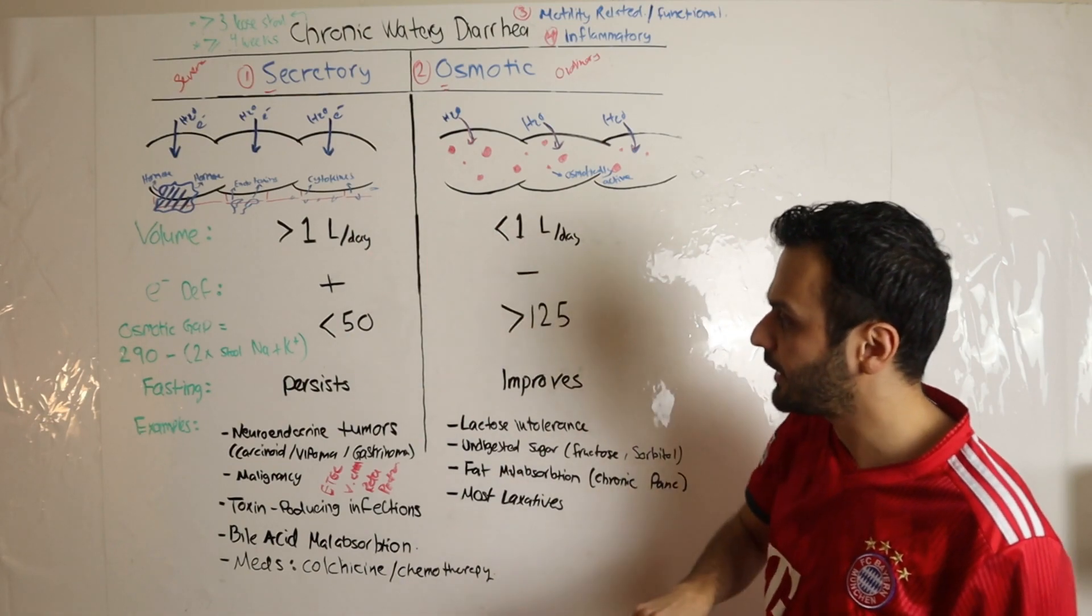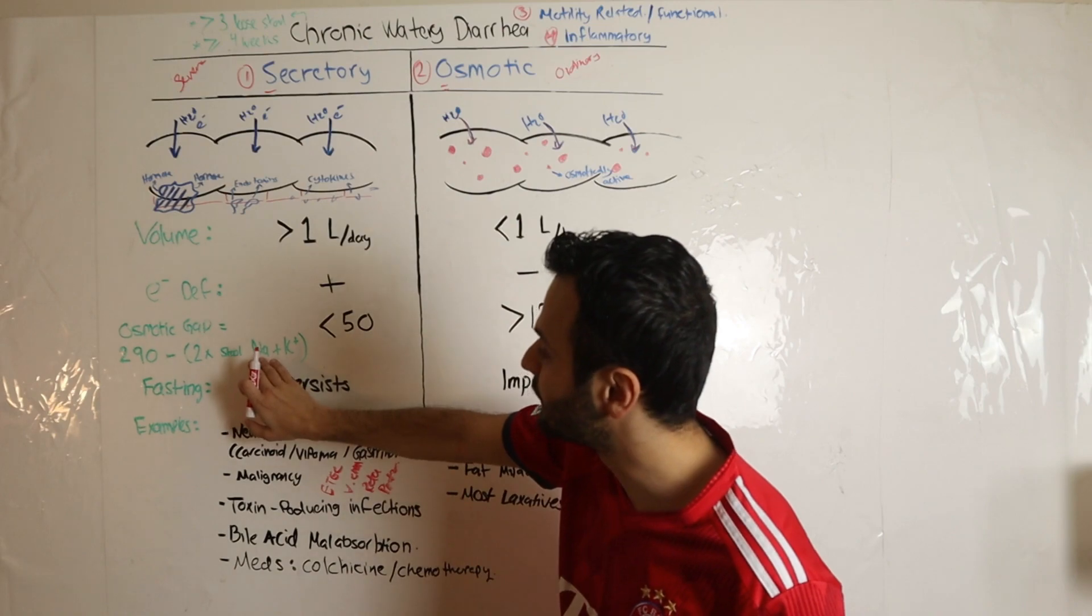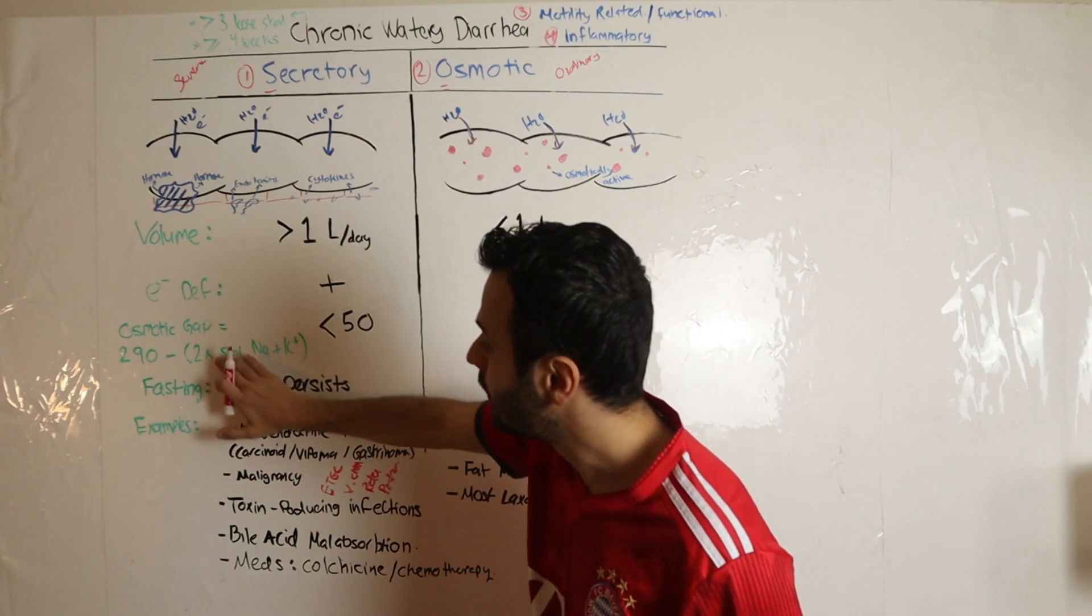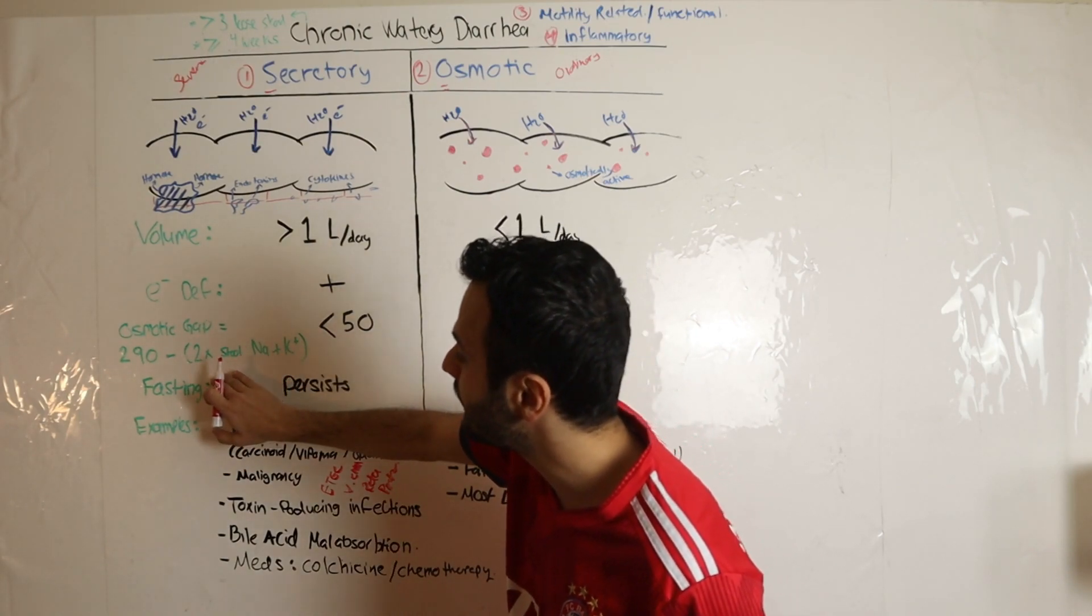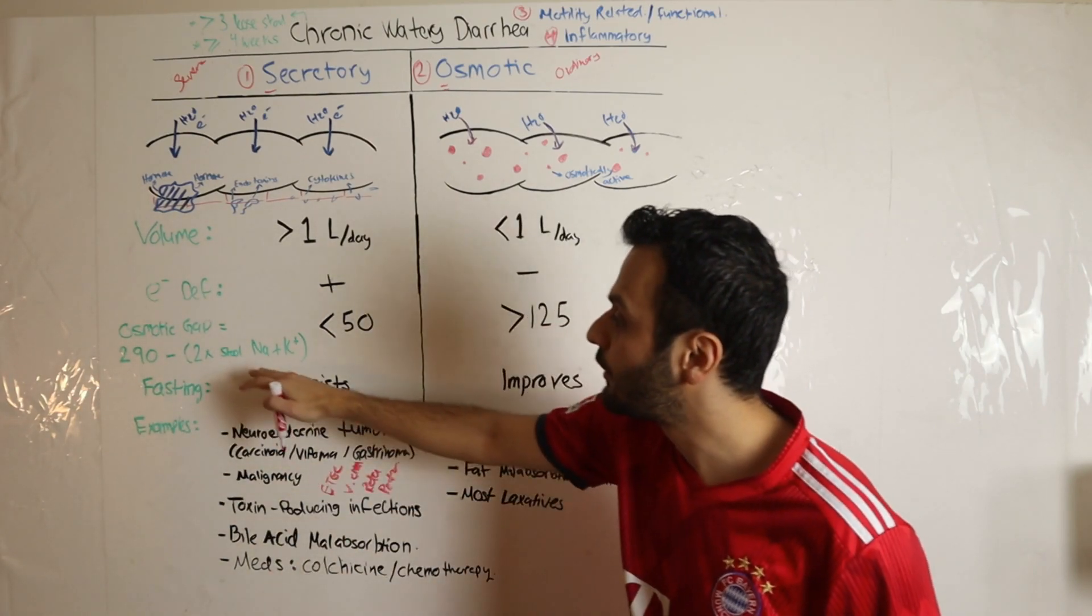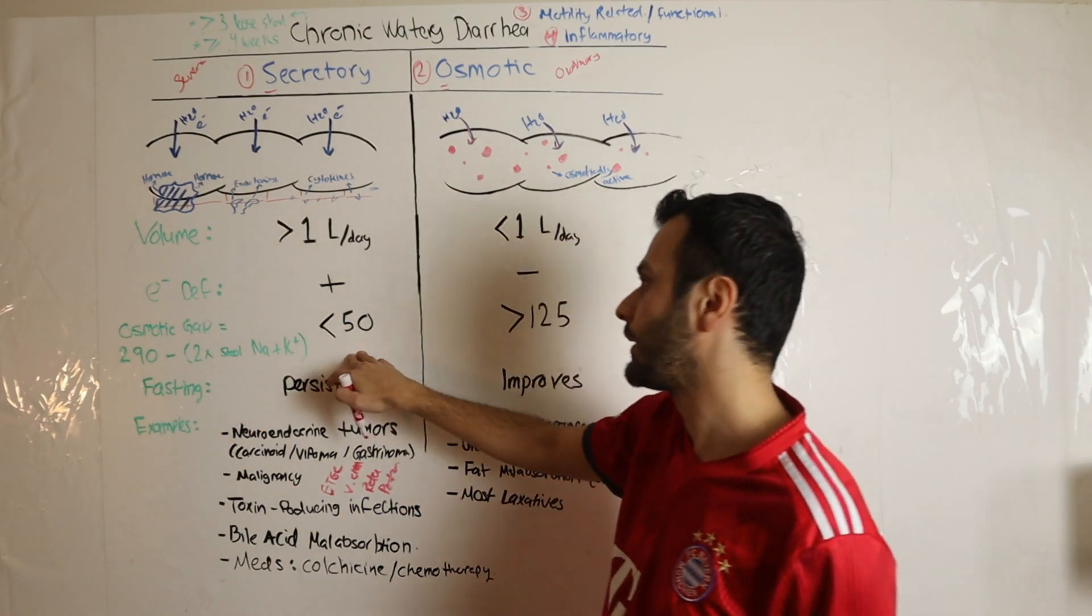Now, in secretory diarrhea, remember I told you you have excretion of large amounts of electrolytes. So in your stool you'll have a large amount of sodium and potassium, so this number will be extremely high. It's a negative number, so your osmotic gap will be extremely low, usually less than 50.